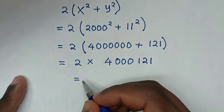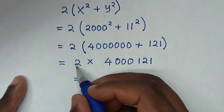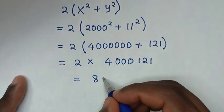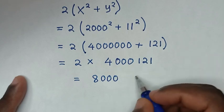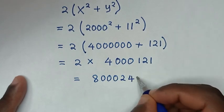This equals 2 times 4,000,121, which equals 8,000,242.